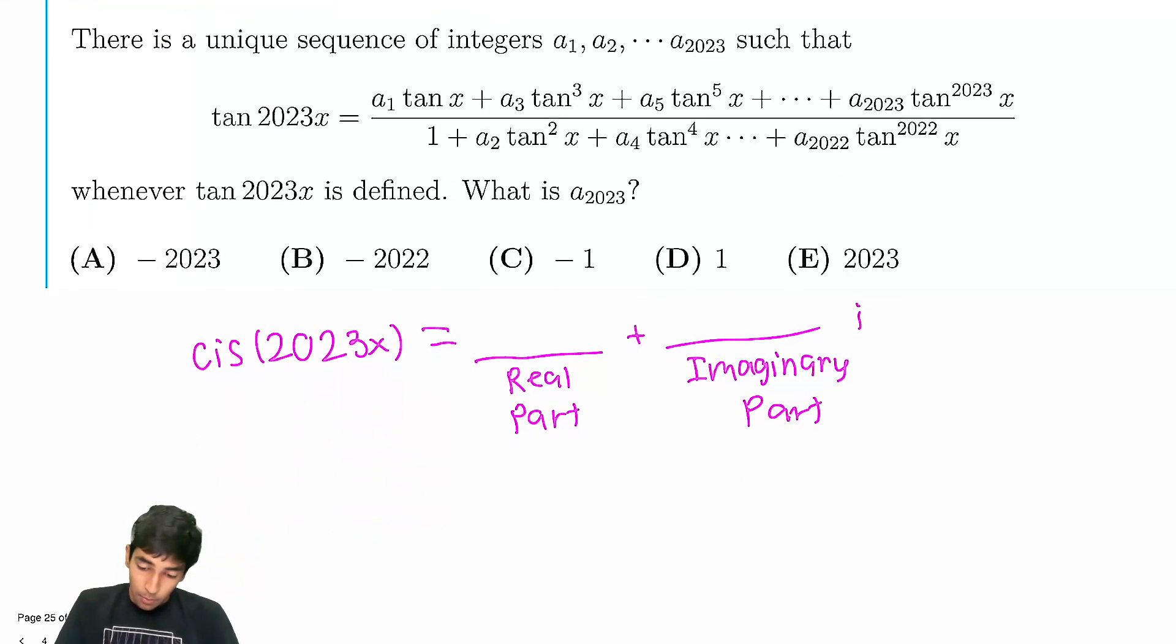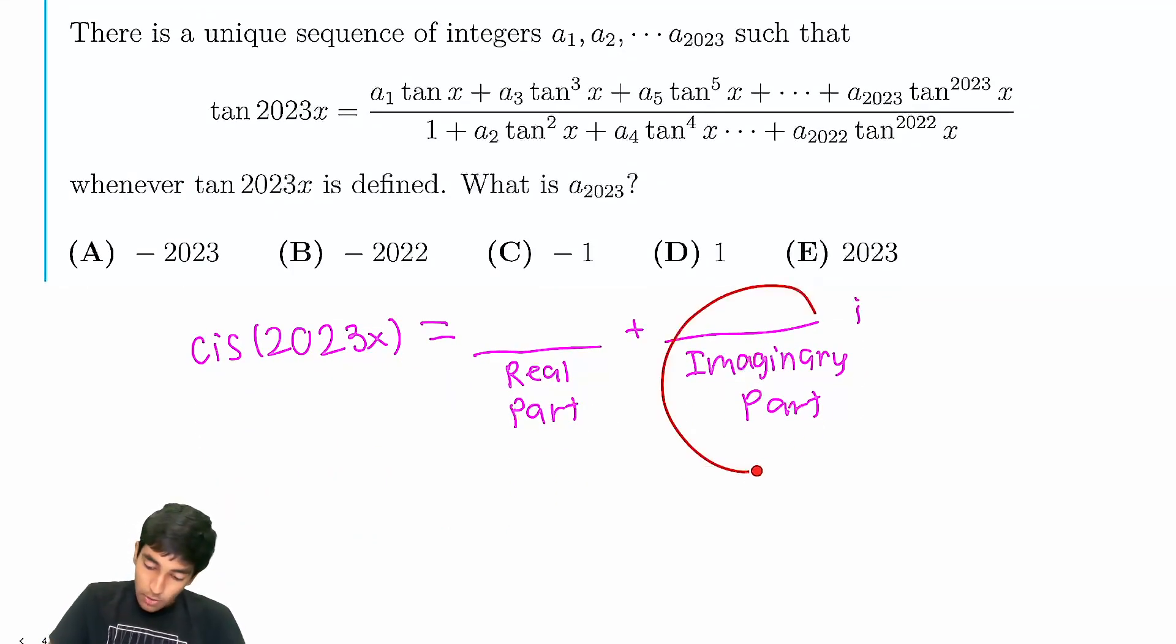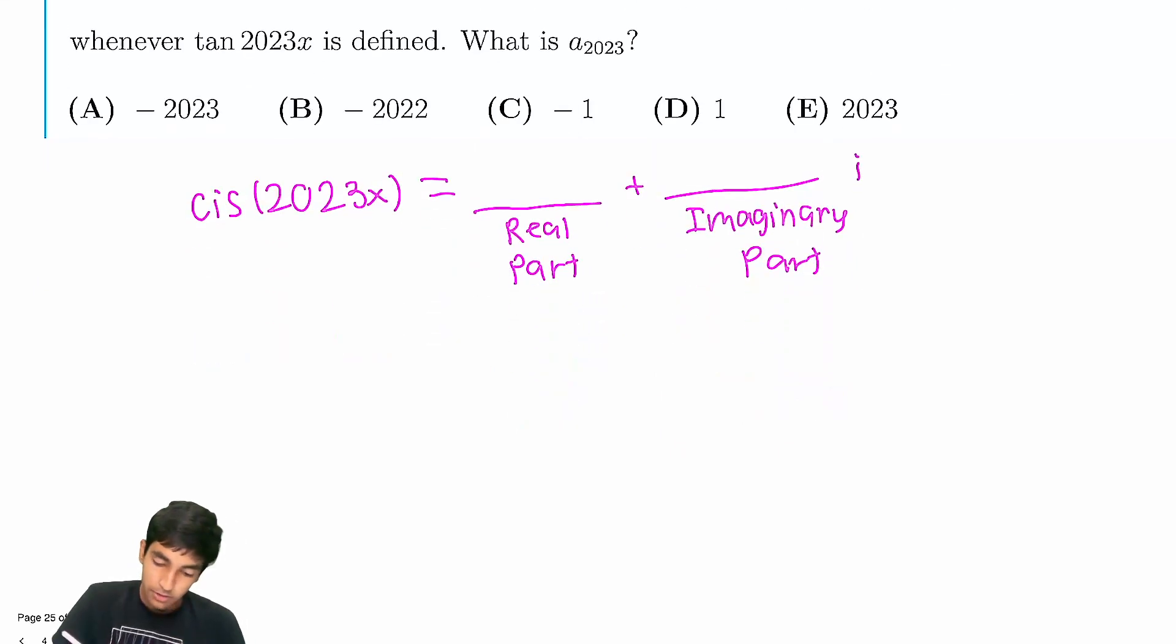So that's kind of what motivates this, because now, this ratio we're looking for, which is cis of 2023x, we also know by De Moivre's, this is just cis of x to the power of 2023. By the way, I covered these concepts, De Moivre's, Roots of Unity, all that stuff, in my complex numbers videos, you can check them out.